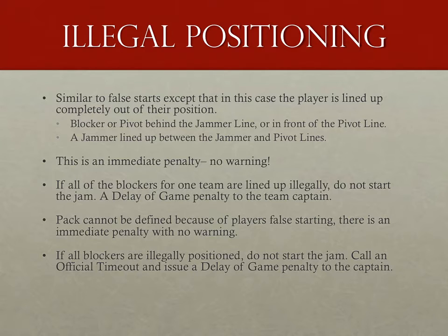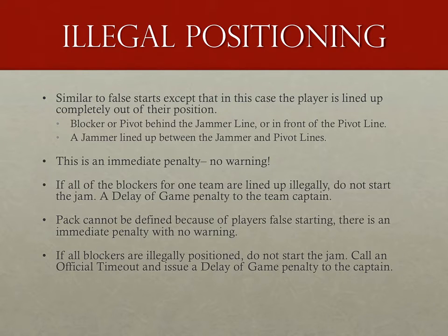Illegal positioning is similar to false starting, except that the skater has lined up completely out of their starting area. A blocker or pivot completely behind the jammer line or in front of the pivot line, or a jammer completely in front of the jammer line, is in an illegal position. There is no warning for this — it's a penalty as soon as that jam begins. Should all the team's blockers be illegally positioned, do not start the jam. Call an official timeout and issue a delay of game penalty to the captain, not an illegal procedure. If a pack cannot be defined due to false starting — since false starting players cannot be considered part of the pack until after they have yielded — give the penalty to the pivot immediately, or the skater closest to the referee. In this case, there's no opportunity to yield.